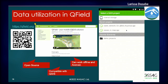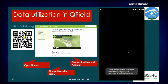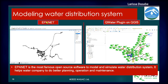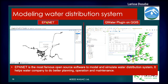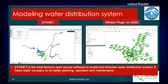This is our data in QField — you can scan the QR code to access it. We also have OpenStreetMap data, and we can use the QWater plugin in QGIS for hydraulic simulation.